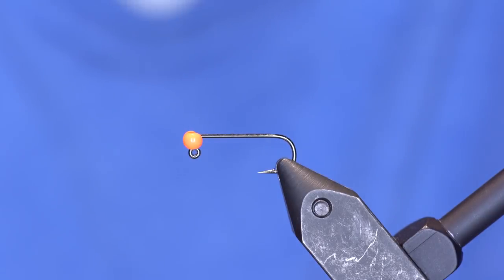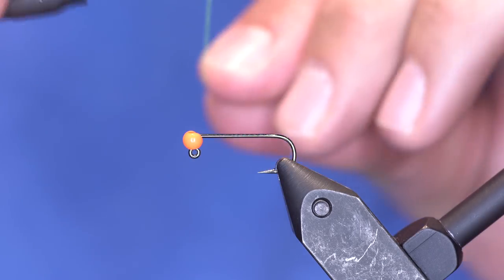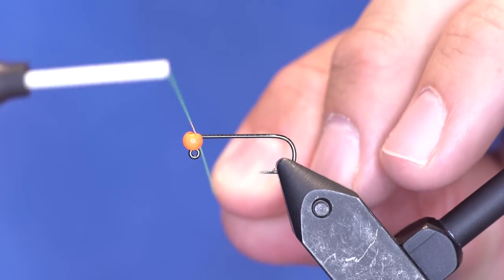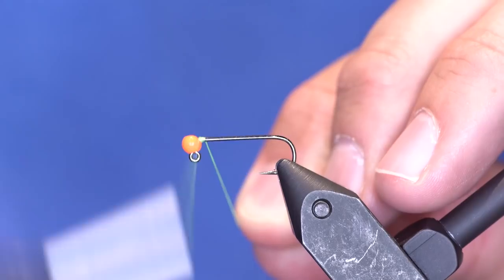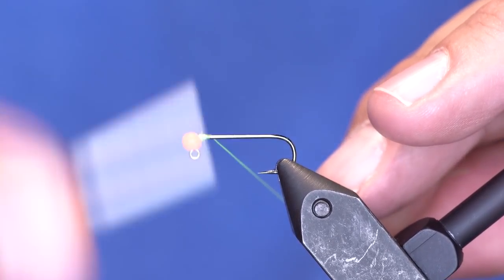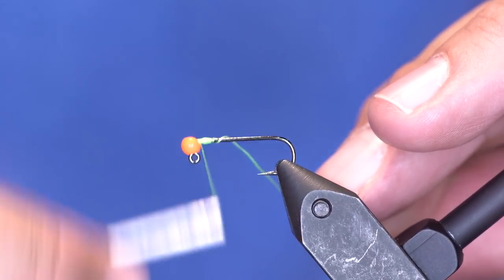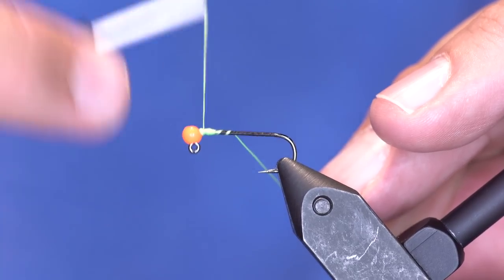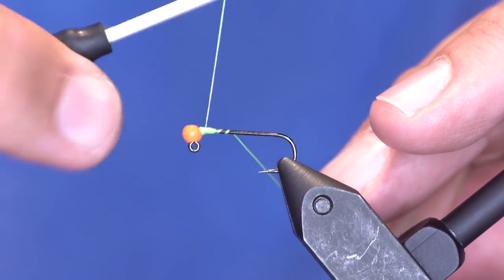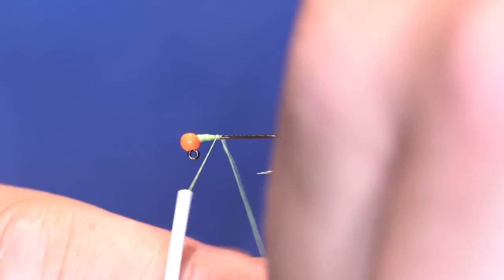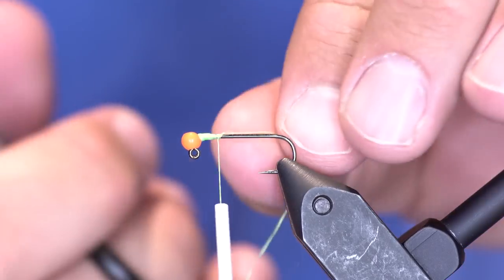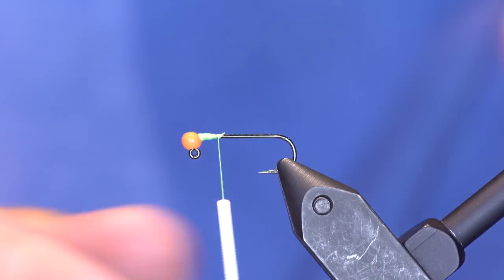I also highly recommend debarbing your hook for bluegill. It just makes it easier to get out of their mouth, and nobody really cares when you lose one. So anyway, debarb them even though I still have the barb on. I've got 140 denier thread in fluorescent chartreuse, and I'm just going to build it up right here behind the bead to somewhat secure it into place while I tie the fly and take it all the way to the back.